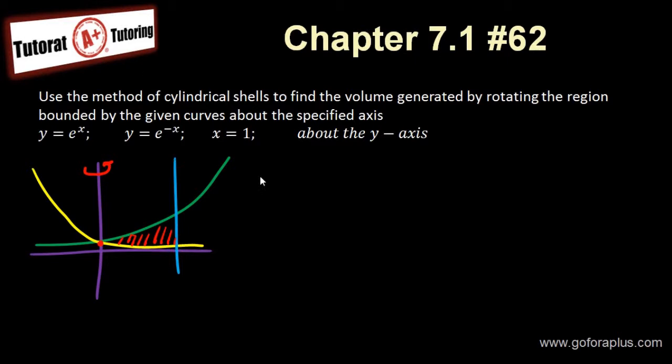So how can we find the 0 here? You can actually equate both functions: e to the x equals e to the minus x, so that you can find the intersection of the two functions. Now, what is e to the minus x? This is basically 1 over e to the x.